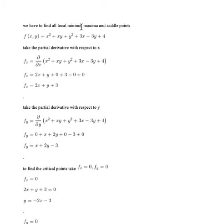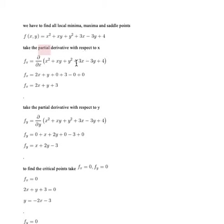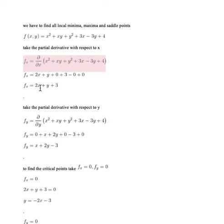We have to find all local minima, local maxima, and saddle points for our function. Taking the partial derivative with respect to x, note that the y variable is constant, so x² becomes 2x, xy becomes y (since y is constant), 3x becomes 3, and -3y and 4 are constants giving 0. So the partial derivative with respect to x is fx = 2x + y + 3.